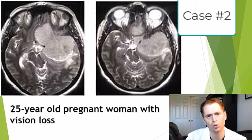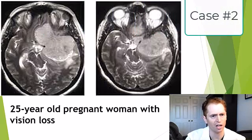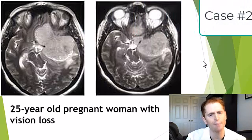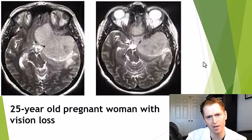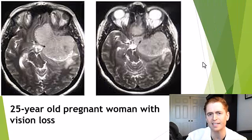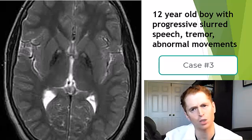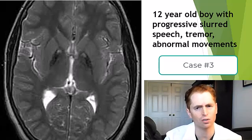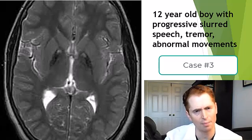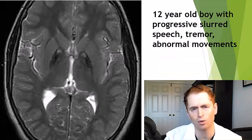We have a 25-year-old woman with vision loss. What is this lesion? Bonus points if you can name the classic exam findings and syndrome which may be occurring. This is the MRI of a 12-year-old boy with progressive slurred speech, tremor, and abnormal movements.